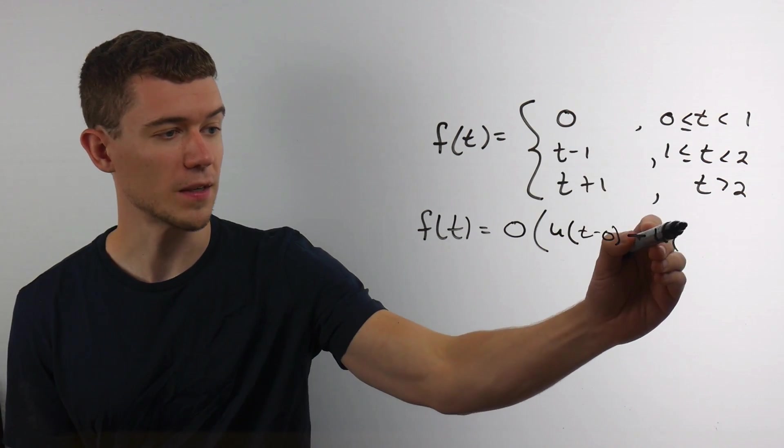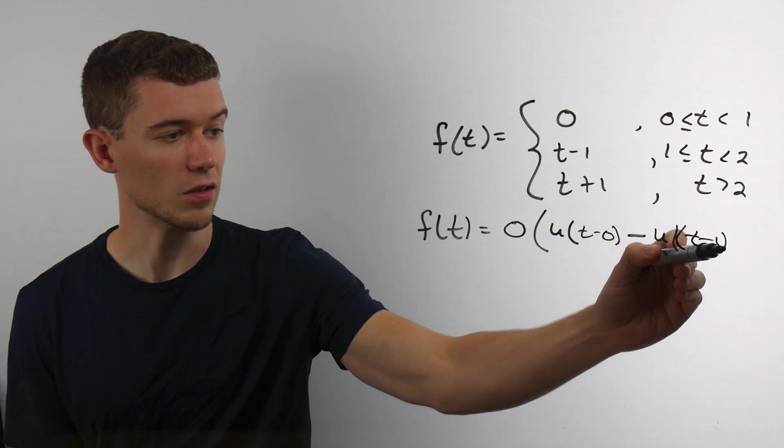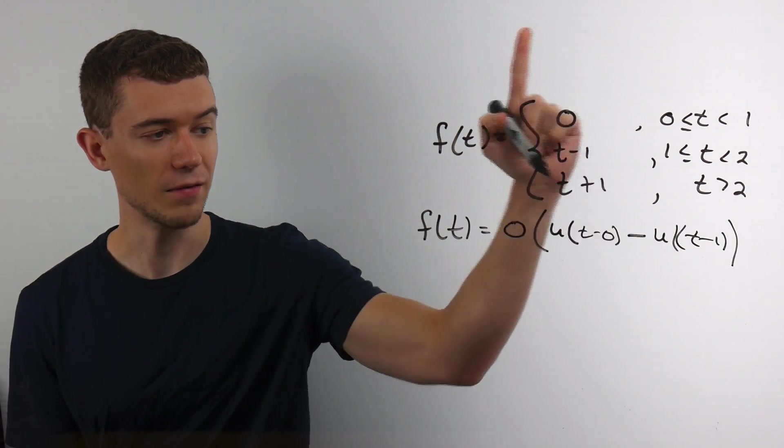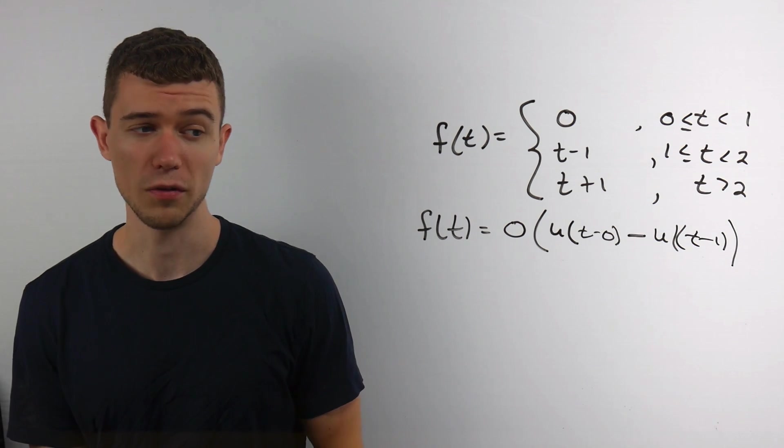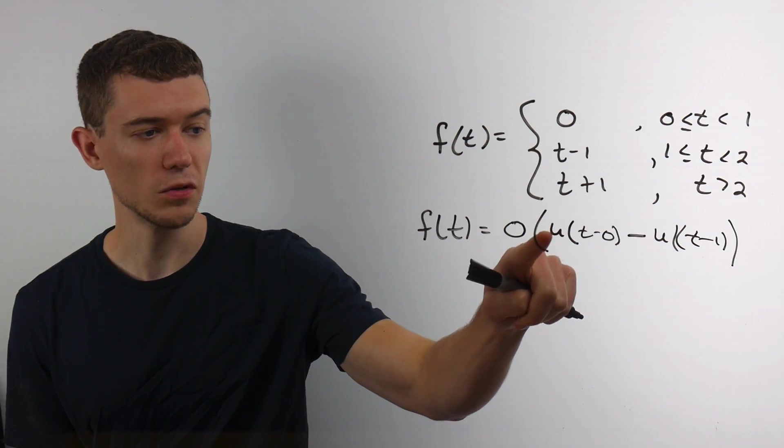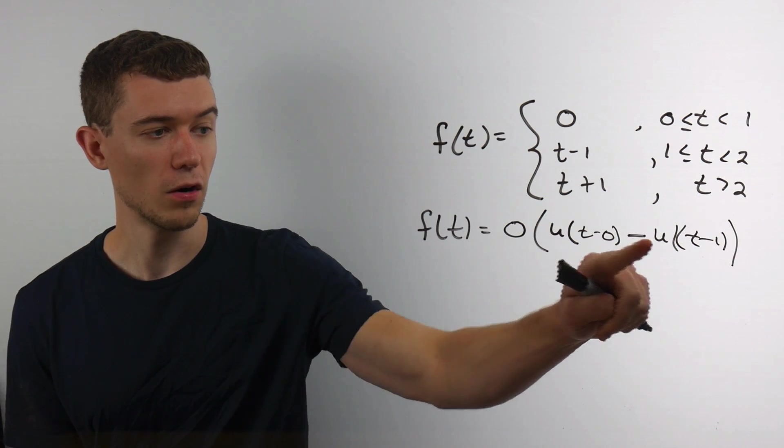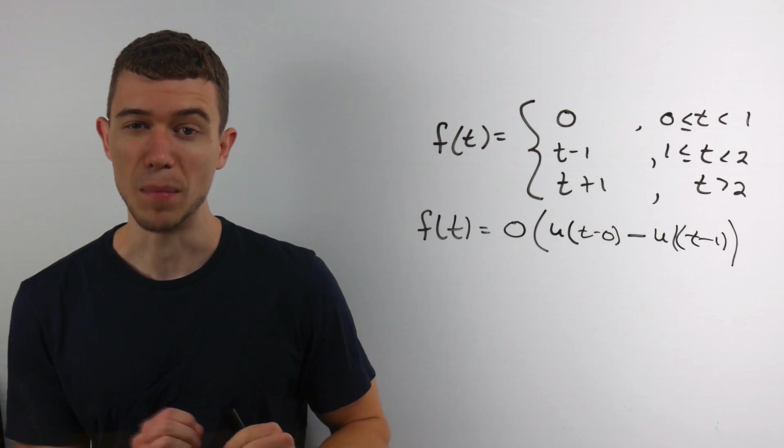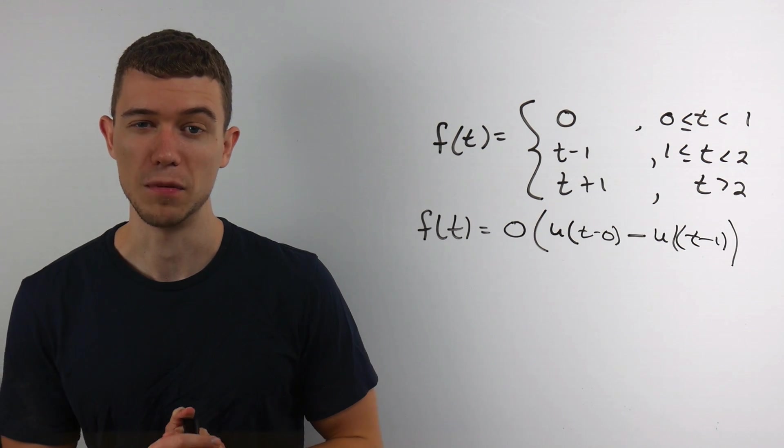So think of the first value, a light switch flipping on, the second value, a light switch flipping off. And again, you might use different notation. Sometimes you'll just see a u sub 0 or a u sub 1 here instead of the t minus. Both would mean the same thing.